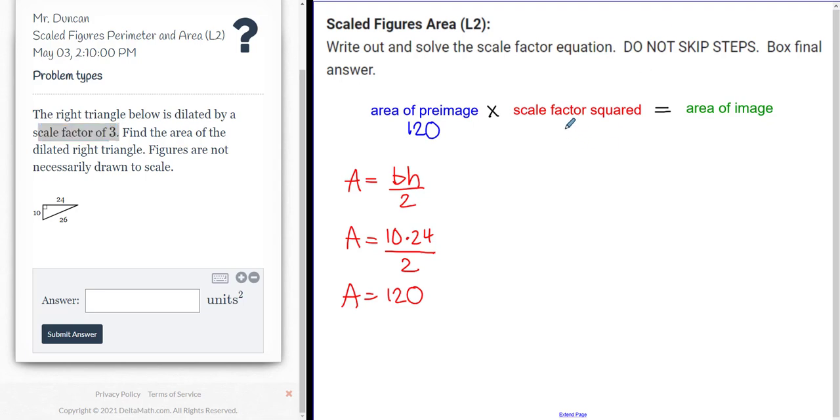So when I go over here and I plug it in here, my scale factor is 3. I actually need to square it. And the simple explanation for that is area has two dimensions. So the scale factor needs to be multiplied by itself.